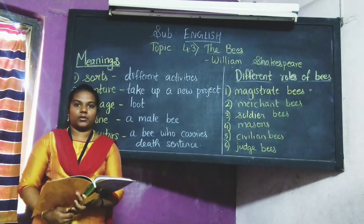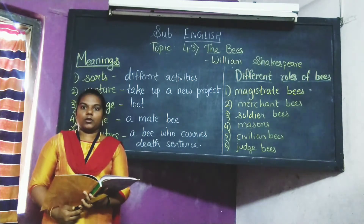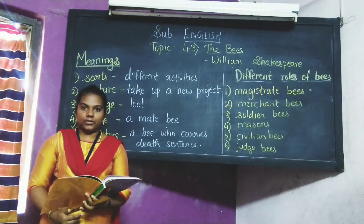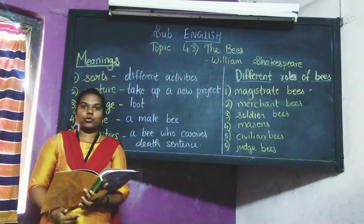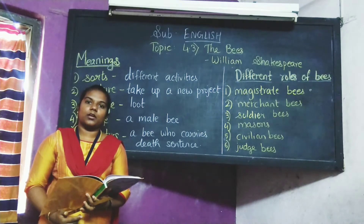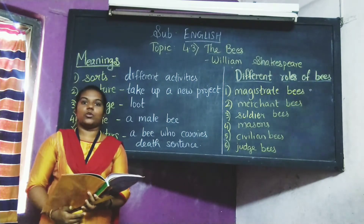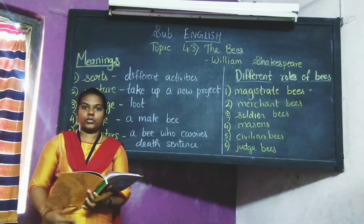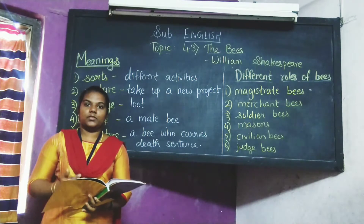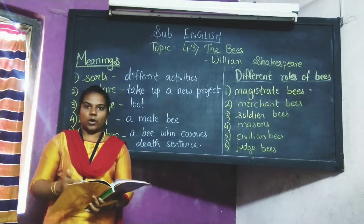The judge bee delivers the male bee to the executors — those who carry out the death sentence. Why does he hand the male bee to the executors? Because the male bee is very lazy; he does not do any work. So the judge becomes very angry with this male bee and hands him over to the executors to give him a death sentence.